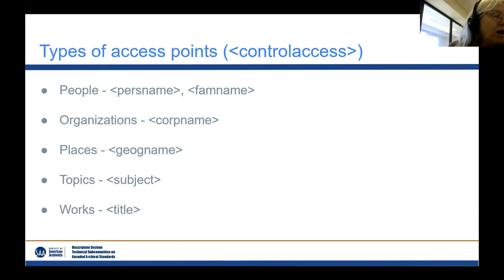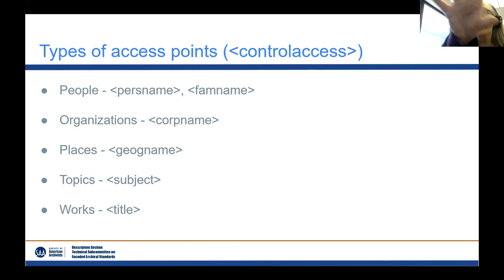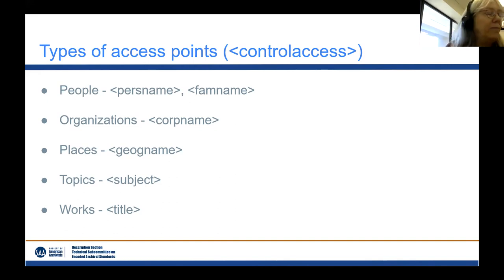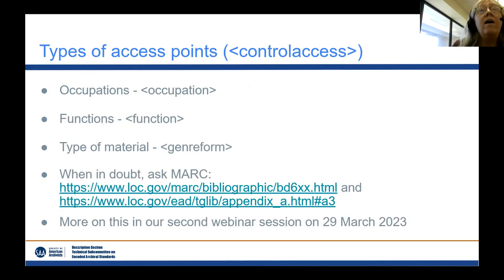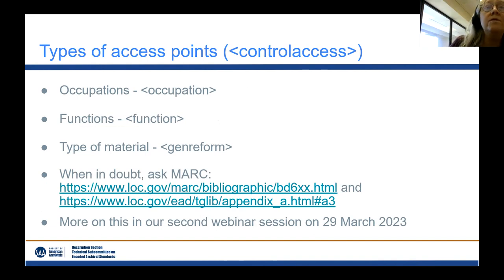The main types of access points are: people — names as access points into the collection; organizations — in EAD the tag is corp name, but it doesn't have to be a corporation, any organization like an orchestra or ballet company counts; places; topics — the classic 'what's the subject?'; works like the Bible or the Quran; occupations; and functions — what function resulted in the creation of this material. Functions are particularly interesting but probably the least used type of access point. For example, the occupation might be tax preparer but the function might be tax assessment.